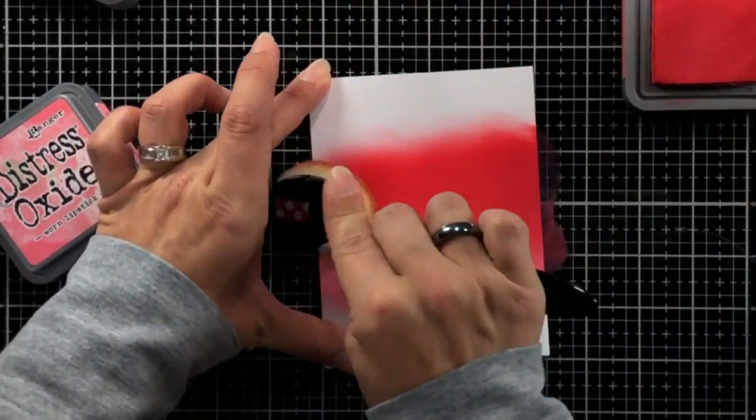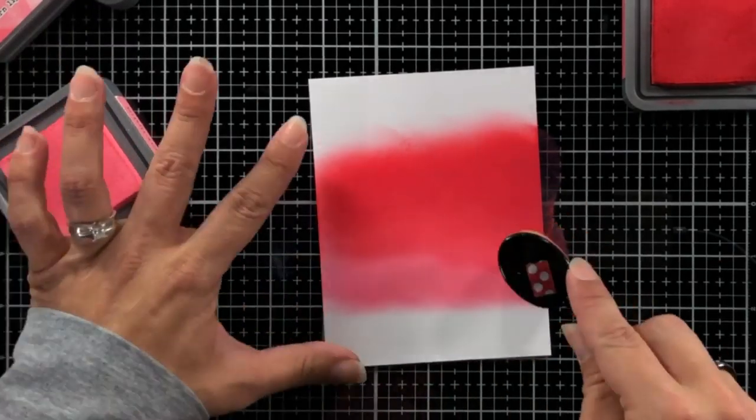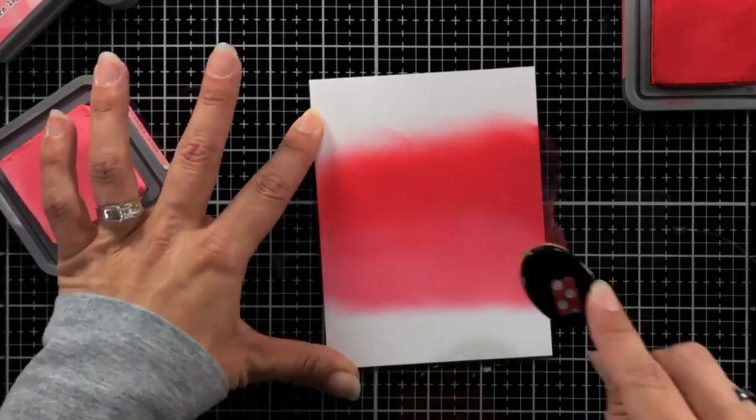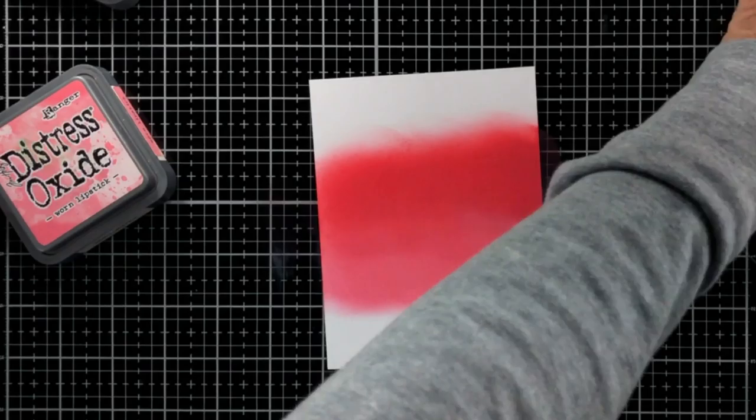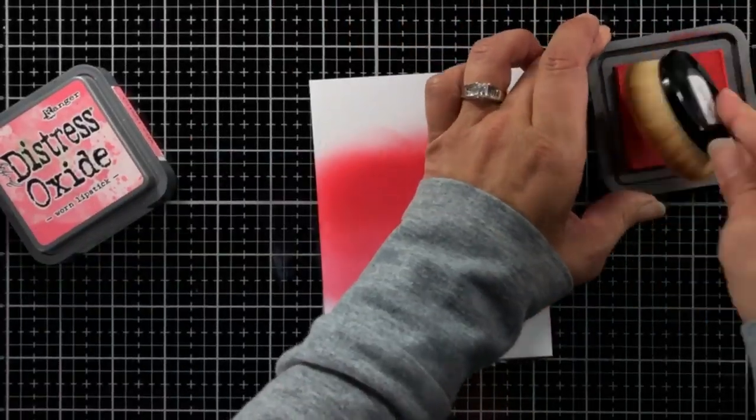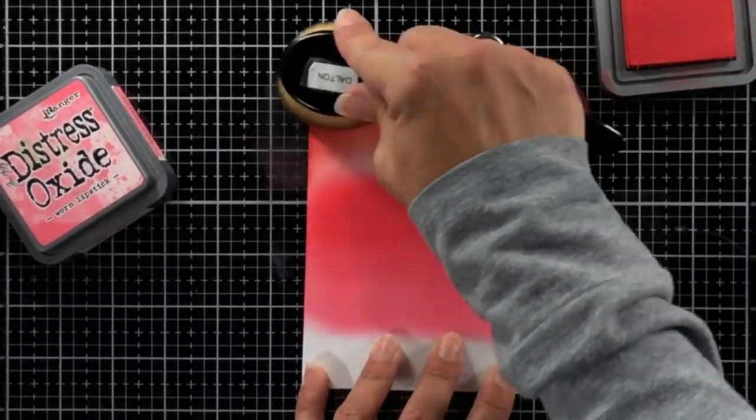So starting with the Worn Lipstick, then the Festive Berries and then I'll switch into the Aged Mahogany and I'll have a really nice gradual transition of colors.